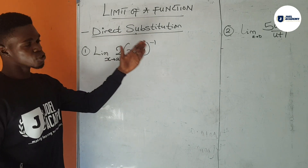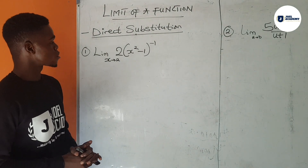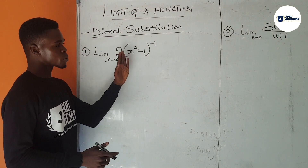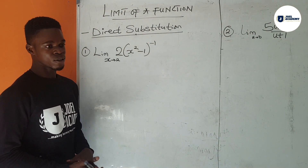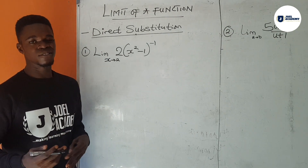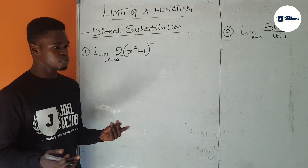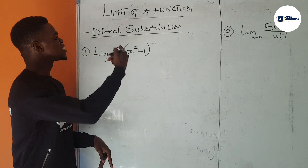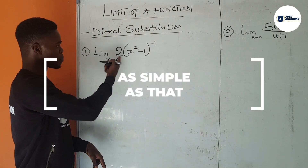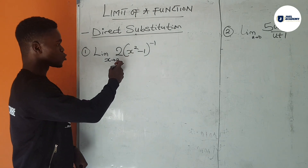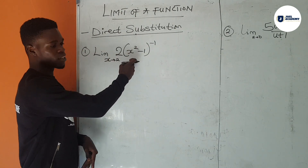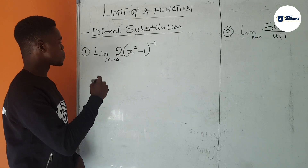Using the direct substitution method, the first question is: find the limit of 2 times the bracket of x squared minus 1, raised to the power of minus 1, as x tends to 2. Direct substitution is very simple — all we have to do is directly substitute whatever value we are given in place of x. We are given 2, so wherever we see x in this expression, we will replace it with 2.